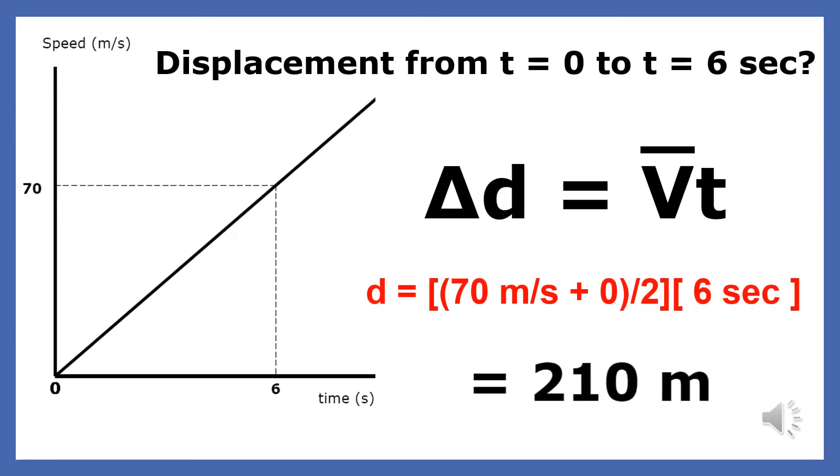This equation tells us that if you wanted to find out how far an object traveled from 0 to 6 seconds, you need to multiply the average velocity by the time traveled.